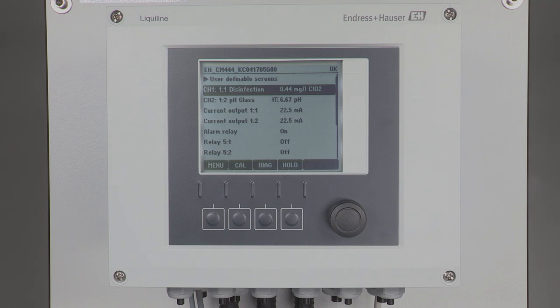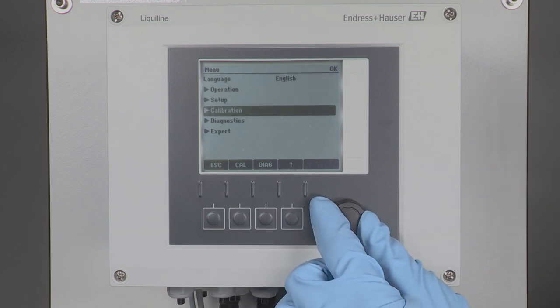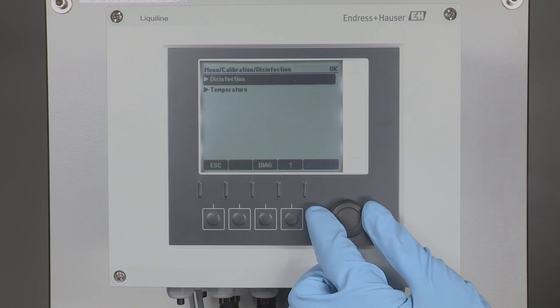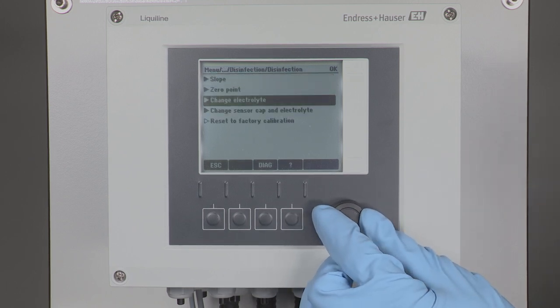Reset the operating hours counter for membrane and electrolyte in the Liquiline CM44 transmitter. Go to menu, calibration, the channel of your chlorine dioxide sensor, disinfection, and change sensor cap and electrolyte.